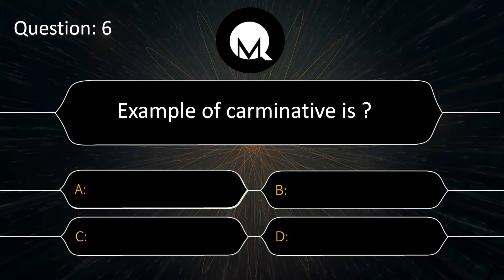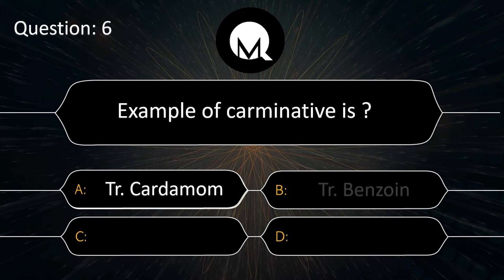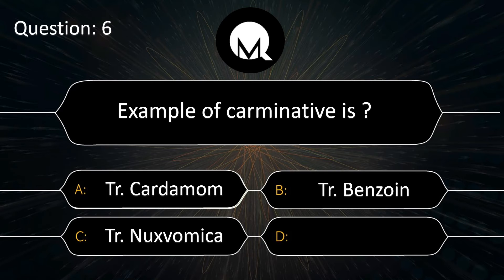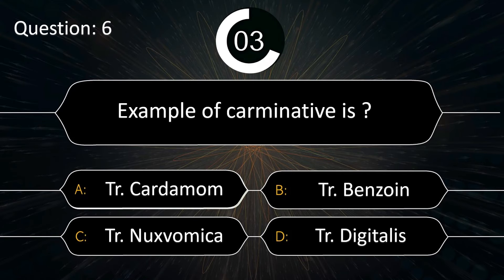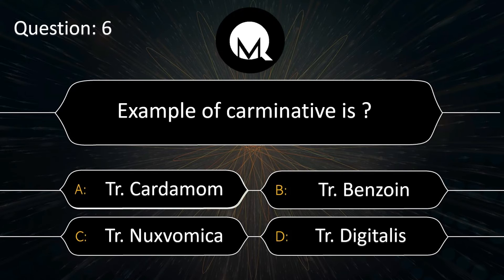An example of a carminative is: tincture cardamom, tincture benzoin, tincture nux vomica, or tincture digitalis. The answer is tincture cardamom.